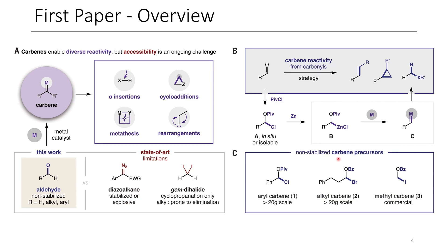Here you can see what I summarized on the last slide, where aliphatic aldehydes are treated with benzoyl bromide, benzaldehydes are treated with pivaloyl chloride, and formaldehyde is treated with benzoyl iodide.